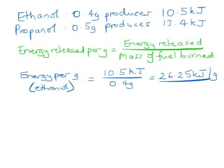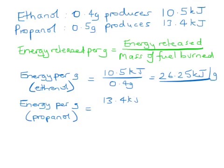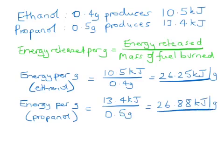Now we'll do the same thing for the propanol. Here the energy released was 13.4 kilojoules but the amount burned was 0.5 grams. So that comes to 26.88 kilojoules per gram. Looking at those two figures, the propanol is the better fuel in that it produces slightly more energy per gram of fuel burned.